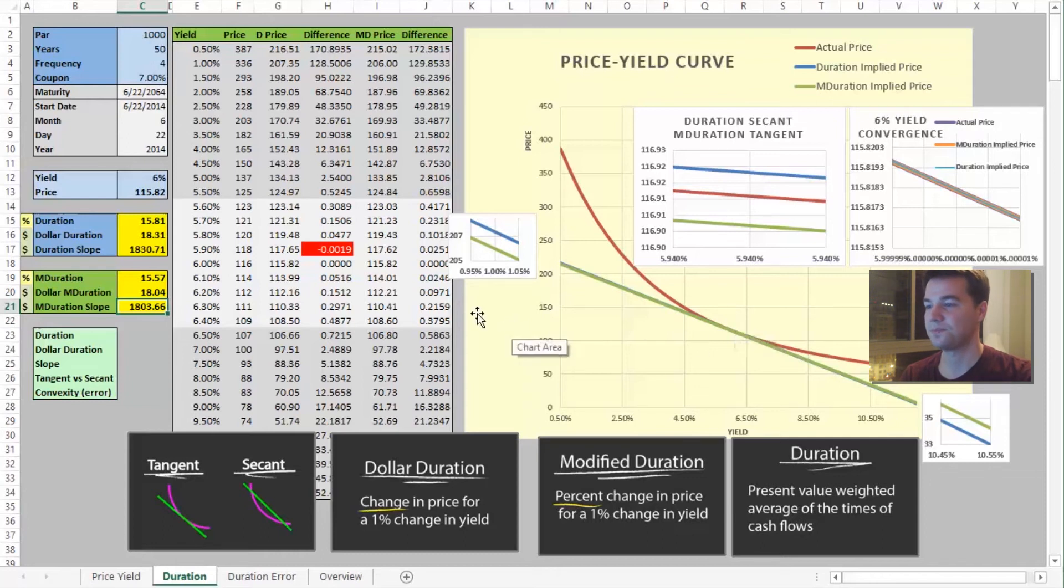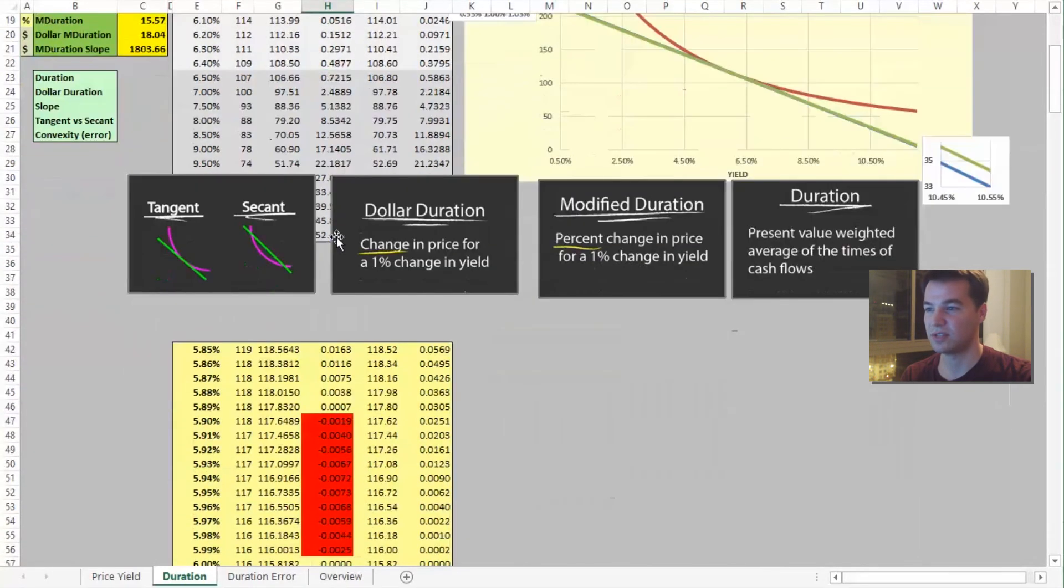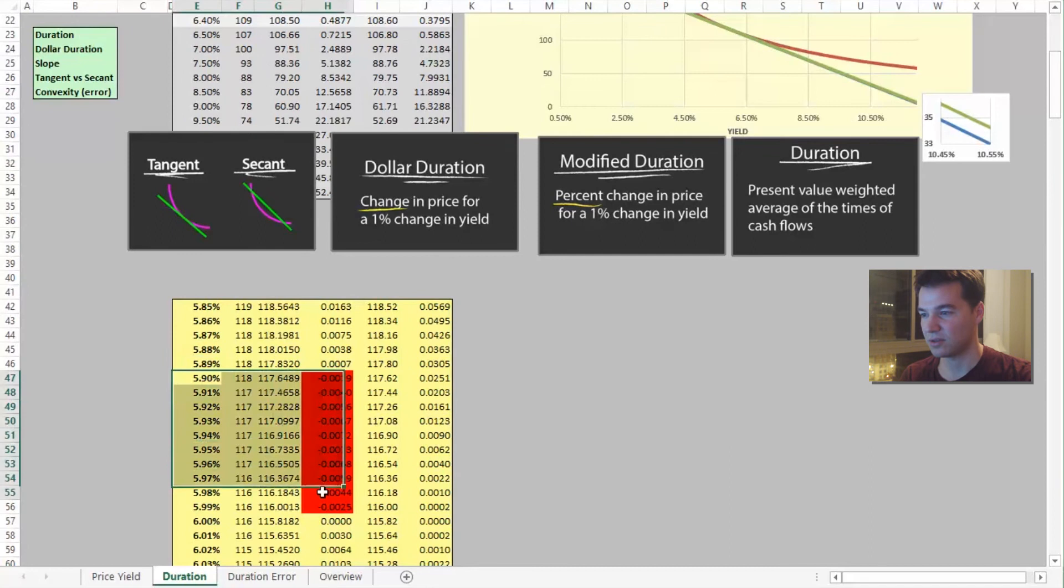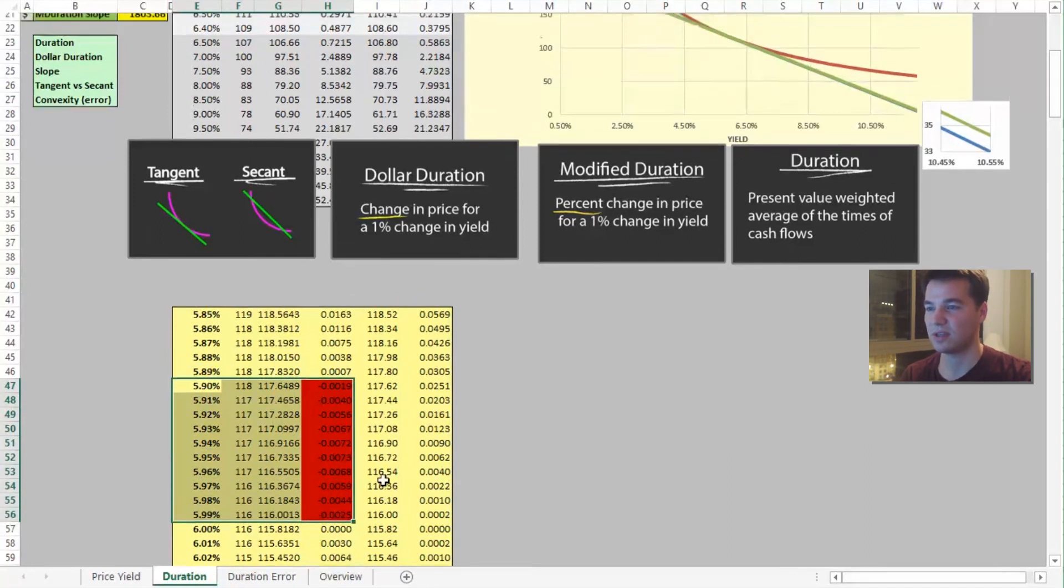So it turns out that the duration line is above the price-yield curve right here at 5.9 percent. I also drilled down here. It is also above the price-yield curve for that entire range, 5.9 percent, all the way up to where it meets it at 6 percent. And why is that?